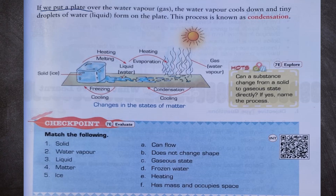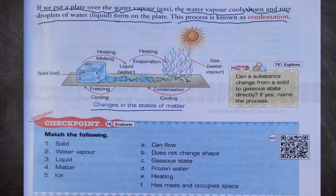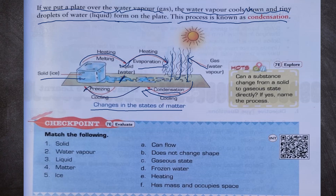We can see through this picture the changes in the states of matter. If we put a plate over the water vapor gas, the water vapor cools down and tiny droplets of water form on the plate — this process is known as condensation. When liquid is cooled down further, it freezes down to a solid. This process is freezing.